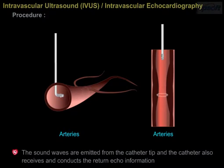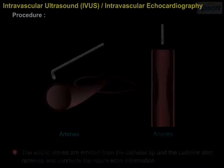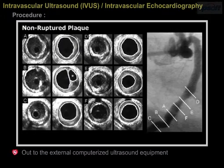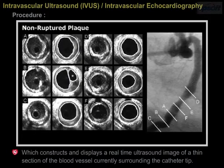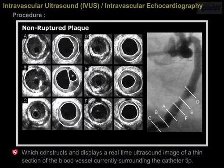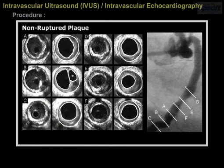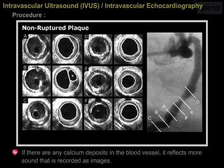The sound waves are emitted from the catheter tip, and the catheter also receives and conducts the echo information out to the external computerized ultrasound equipment, which constructs and displays a real-time ultrasound image of a thin section of the blood vessel currently surrounding the catheter tip. If there are any calcium deposits in the blood vessel, they reflect more sound, which is recorded as images.